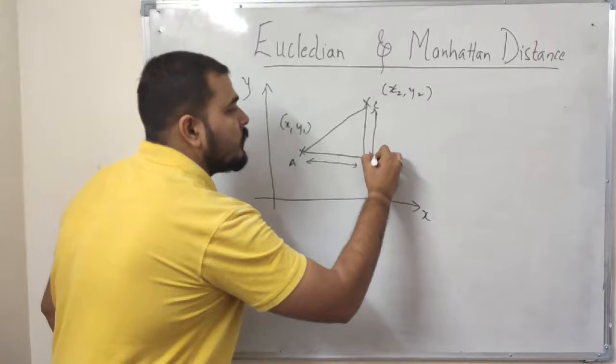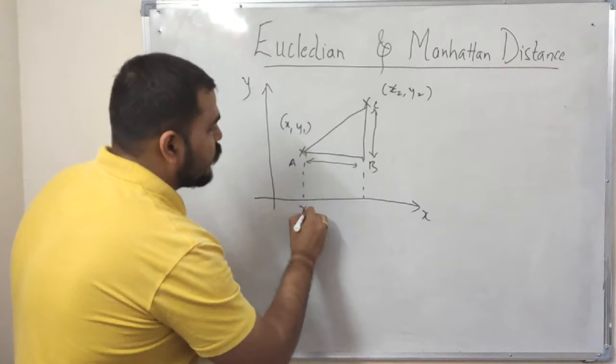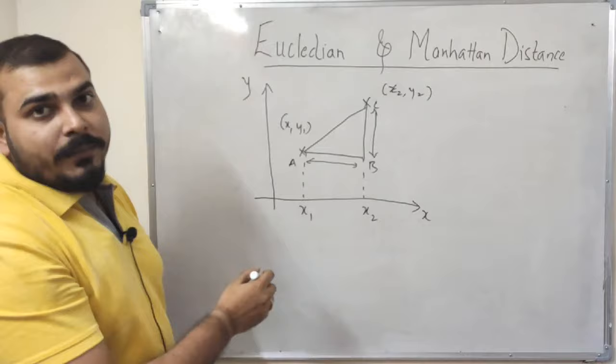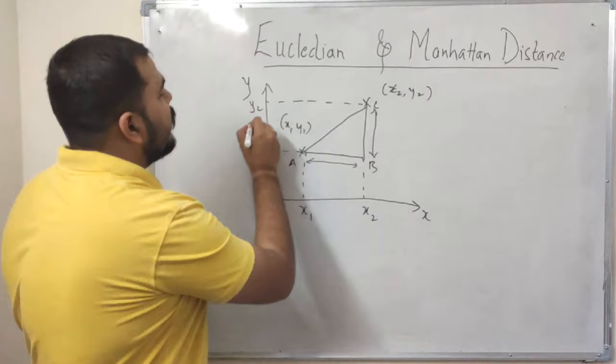Now how to calculate it again? I'll project this over here. This is my x1, this is my x2, right, because this particular point x2 and y2 is here. So if I project it down over here towards the x-axis, this becomes my x2, this becomes my x1. Now similarly, if I project this over here for the y-axis, this will basically be my y2, this will basically be my y1.